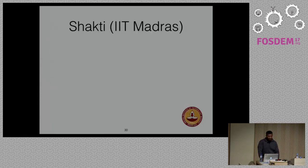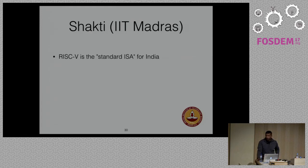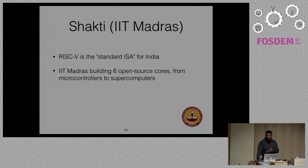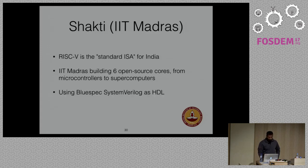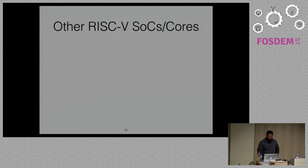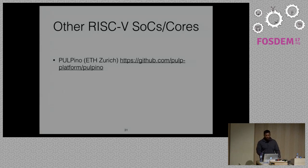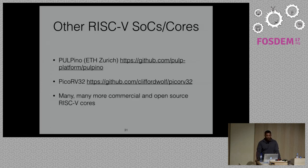The Shakti cores from IIT Madras are another set of RISC-V SOCs. RISC-V is apparently the standard ISA for India, and IIT is building six open source cores — literally going from microcontrollers to supercomputers. They're using BlueSpec System Verilog as their HDL, and their code is on Bitbucket. Other RISC-V SOCs include Pulpino from ETH Zurich and PicoRV32 from Cliff Wolf, a size-optimized 32-bit RISC-V implementation. There's a new RISC-V core popping up every day.